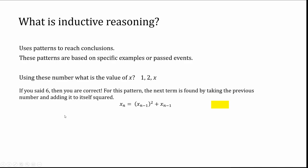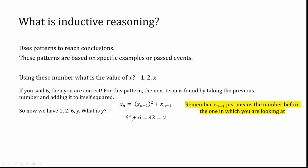Let's look at our generating expression. For any term n, we can take the previous term n-minus-1, square it, and then add the previous term to get the most current term. Right now, x is the term we're looking for. I'm going to plug in 2 for n-minus-1, so I have 2 squared plus 2, which is 6. For the fourth term, 6 is our previous term, so 6 squared plus 6 gives me 42. We've established our pattern — if we can determine the generating function, we can find any value. Keep in mind, n-minus-1 just means the number before the one you're looking at.